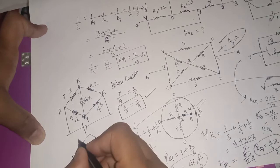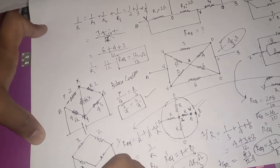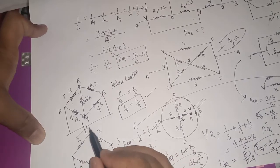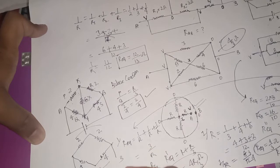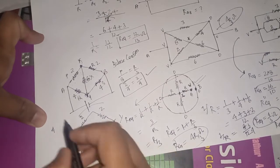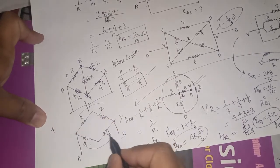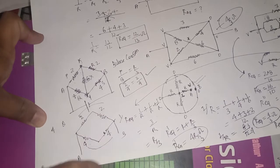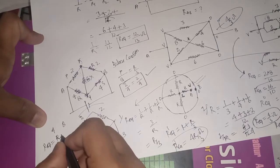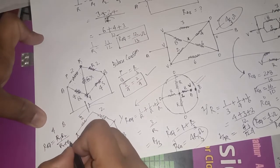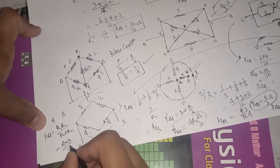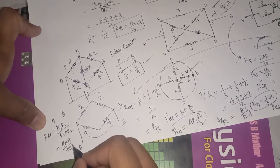So the figure simplifies. Now here: 2 and 2 are in series giving 4; 4 and 4 are in series giving 8. These two — 4 and 8 — are in parallel. So R equivalent equals R1 into R2 divided by R1 plus R2 = 4 into 8 divided by 4 plus 8 = 32 divided by 12 = 8 by 3 ohm. So R equivalent is 8 by 3 ohm.